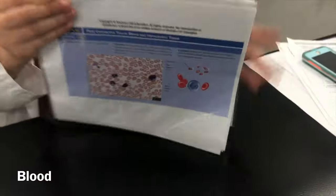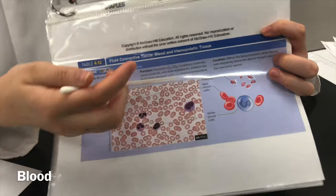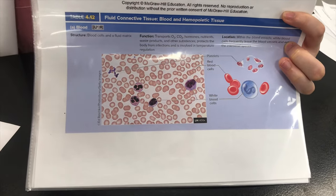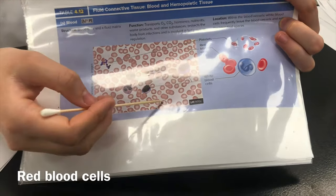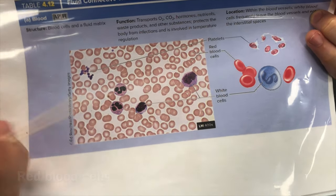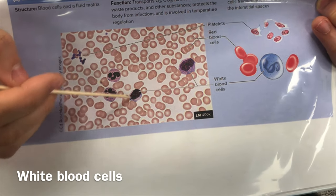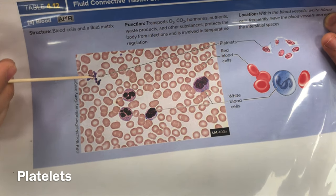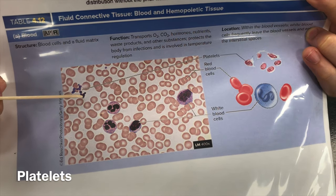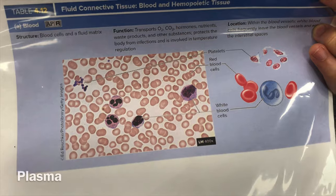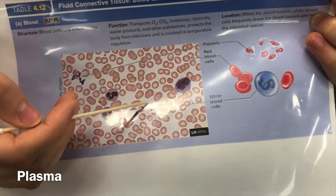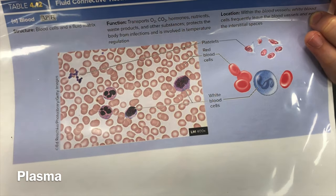Lastly we have blood tissue, also a type of connective tissue — you don't think of blood as a tissue, but it is. Red blood cells are basically all of these cells right here. White blood cells are the larger ones — your immune system fighters that combat bacteria. Platelets are these little things that help with coagulation. And plasma — the matrix of blood — is all of this fluid here; it's what allows blood to flow. That covers all the tissues you need to know!